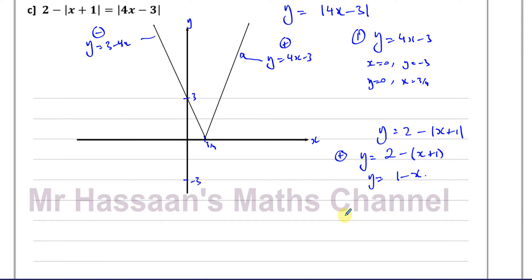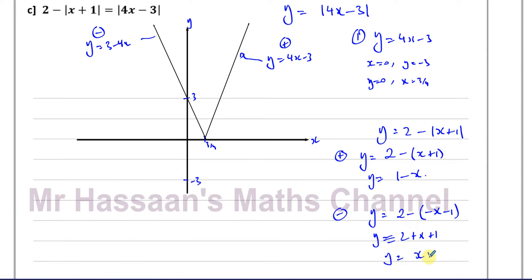The negative argument is when everything inside the modulus changes its sign, turning -(x+1) into -(-x-1) = +x+1, so y = 2 + x + 1 = x + 3. So the positive argument of this graph is y = 1 - x, which passes through (0,1) and (1,0), and the negative argument is y = x + 3.